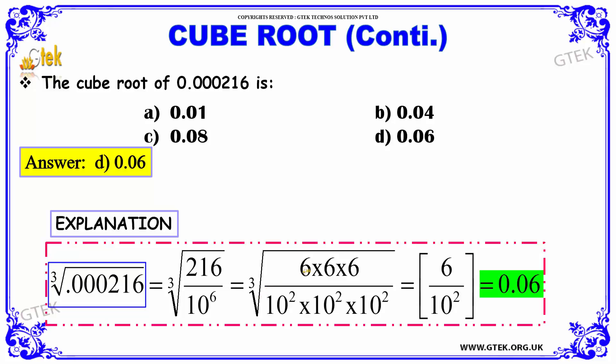The cube root of 6 × 6 × 6 is nothing but 6. 6 by 10² is nothing but 0.06. Hence, our answer is option D.